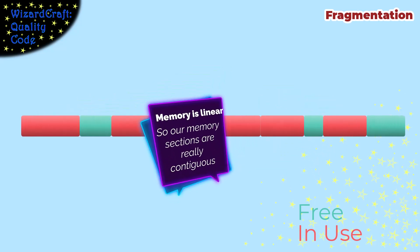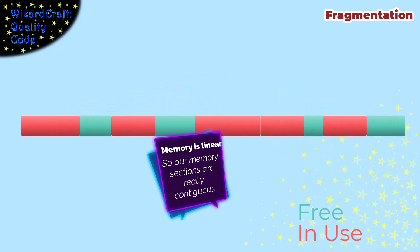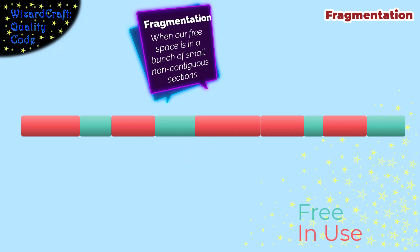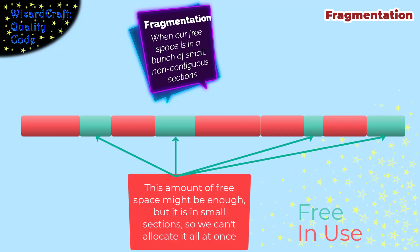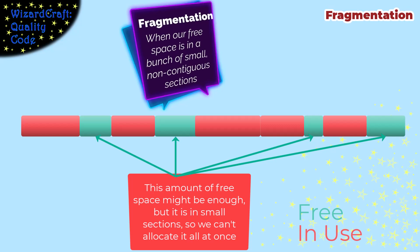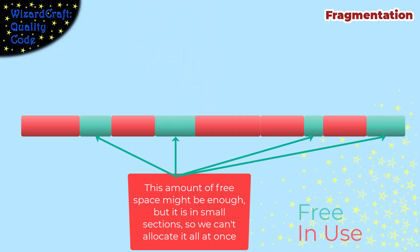Mark-and-sweep can lead to fragmentation, where we have allocated sections spread out across memory with empty spaces in between them. If all of our empty space is broken up into these small segments, the problem is that even if you have enough total space for a big allocation, each small section might be too small for that allocation to fit into.